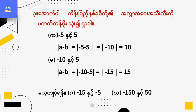Modulus of a minus b equals modulus of minus 10 minus 5, equals modulus of minus 15, equals 15.